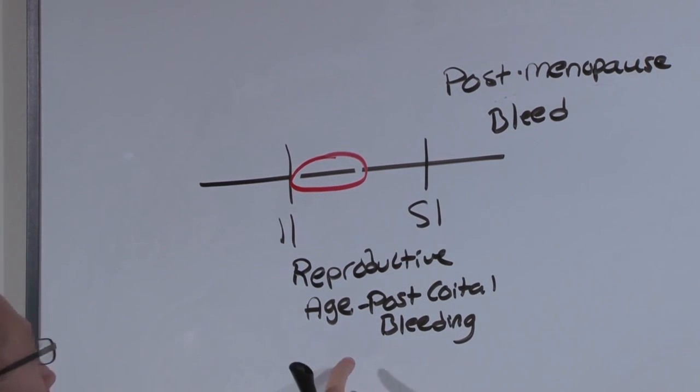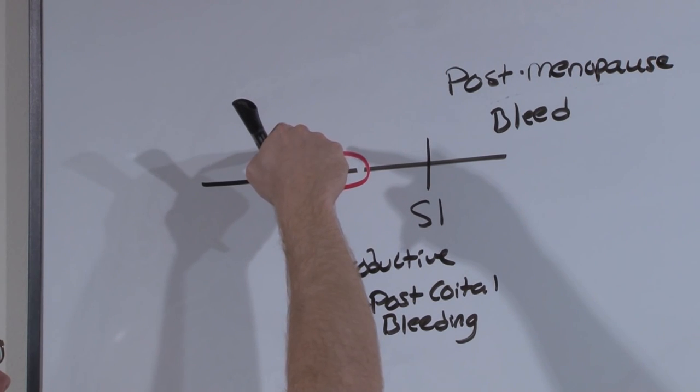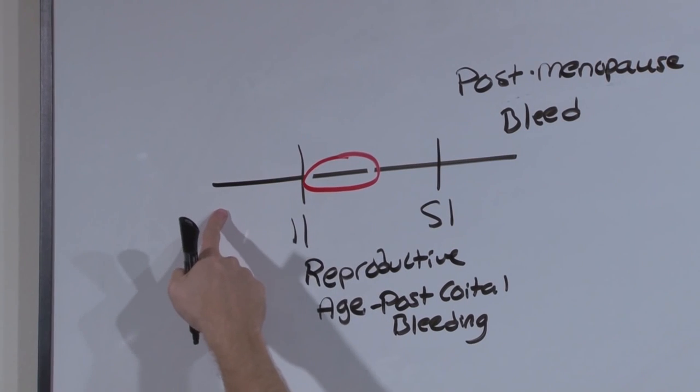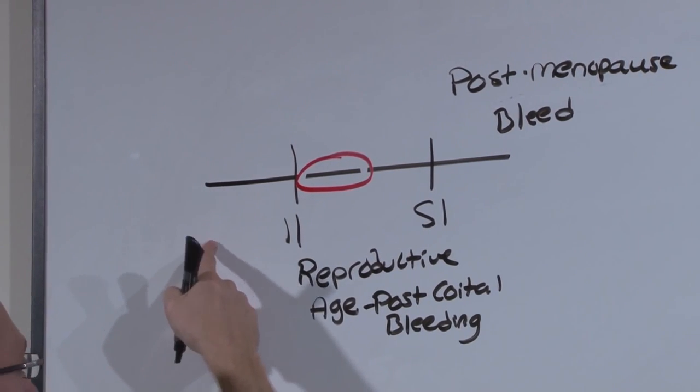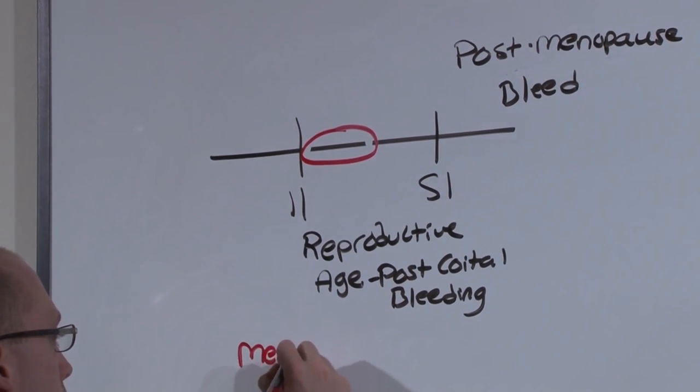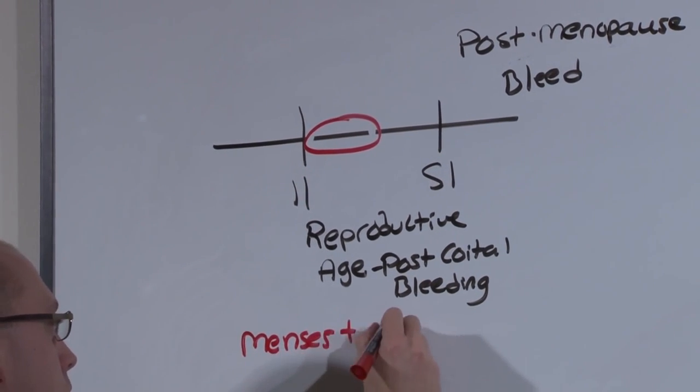The reason why reproductive age females get cervical cancer, and why it's almost never seen in the pre-reproductive age, is because with the onset of menses comes the onset of sexual intercourse.